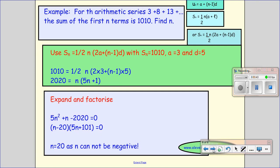Slightly harder question here. For an arithmetic series, 3 plus 8 plus 13, the sum of the first N terms is 1010. Find N. So what am I given? I'm given the sum of the first N terms is 1010. I can see from here A is 3,